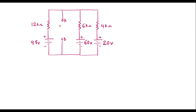Let me draw the equivalent circuit. I have removed the resistor connected between terminal A and B, and we have to find the voltage across that resistor later. In Millman's theorem, first we calculate the Millman's voltage Vm and the Millman's resistance Rm. Then we connect Vm in series with Rm, connect the 2 kilo ohm resistor in series, and find E0.